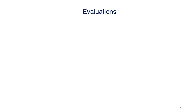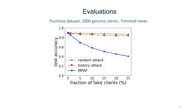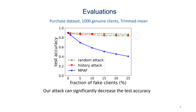Next, I will show some example evaluation results. We perform the evaluation with the Purchase dataset. We assume there are 1000 genuine clients and TrimMean is used for aggregation. This figure shows the test accuracy under different attacks when the fraction of fake clients varies. The random attack means we use random noise as fake local model updates. History attack means that we reverse the history global model updates as the fake local model updates. These two are baseline attacks for fake client-based scenarios. We observe that our attack can significantly decrease the test accuracy while the baseline attacks cannot. We have the same observation on other datasets and other aggregation rules we evaluated.